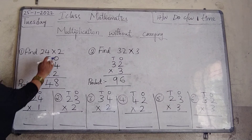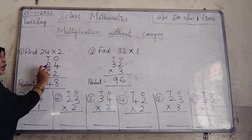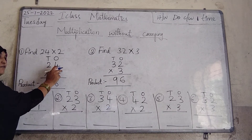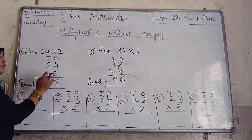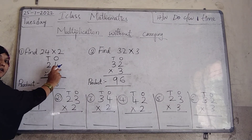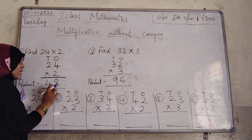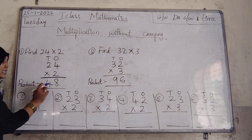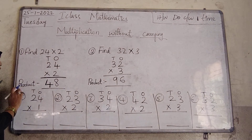This is called 10's place because 2 represents 2 tens — 2 times 10 is 20. So 20 plus 4 equals 24. There is 2 in 10's place and 4 in 1's place. For 24 into 2 we have to use the 2 times table: 2 ones are 2, 2 twos are 4, 2 threes are 6, 2 fours are 8. So 1's place gives 8, and 10's place gives 4. The product is 48. 24 into 2 is equal to 48.